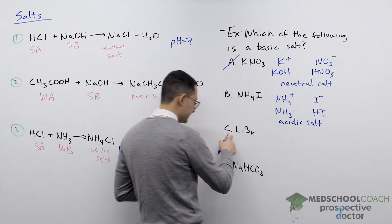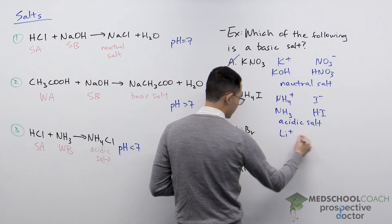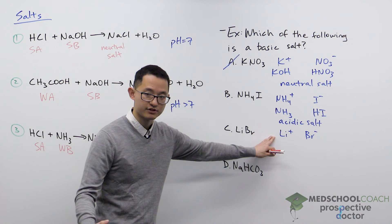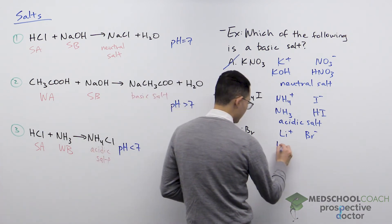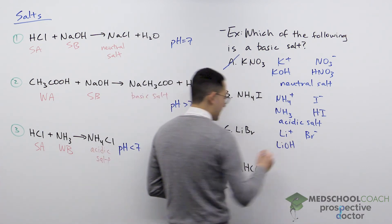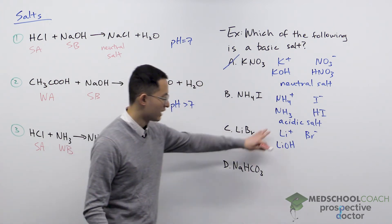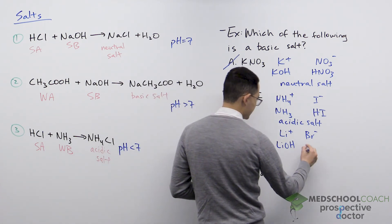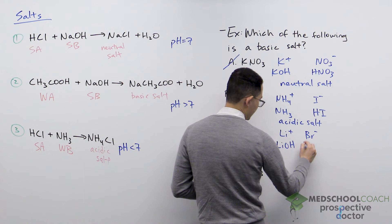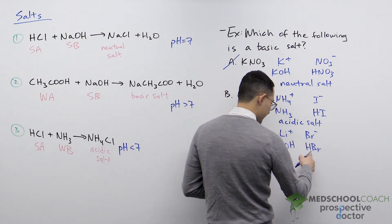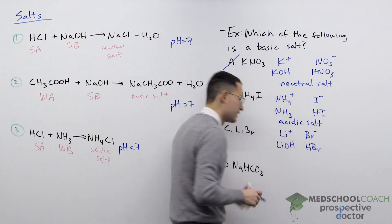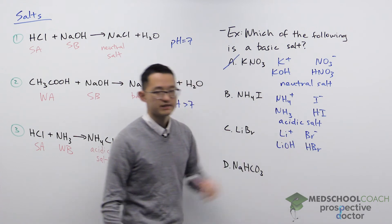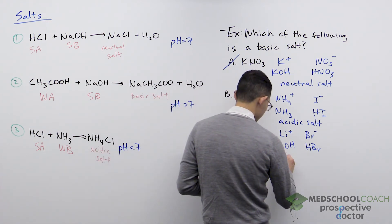Option C is LiBr, so this is Li+ and Br−. Li+ has a positive charge — it's the conjugate acid of LiOH, which is a strong base, so Li+ has no acidic properties. Br− has a negative charge, making it the conjugate base of HBr, which is a strong acid, so Br− has no basic properties. This salt has no acidic properties and no basic properties — it is also a neutral salt.